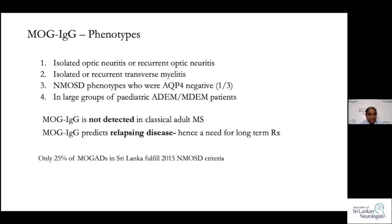Another important point: if MOG-IgG is positive in a person investigated for CNS inflammatory demyelinating disease, it is unlikely that the patient has adult-onset MS. This is essentially a reverse biomarker in adult patients — you cannot have MOG-IgG if you have adult-onset MS. Also, the presence of MOG-IgG predicts relapsing disease.